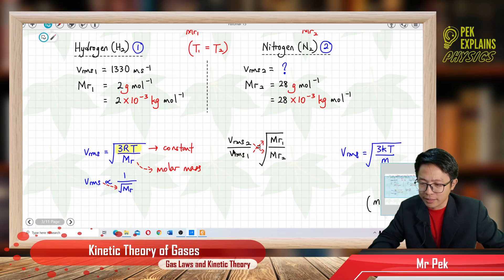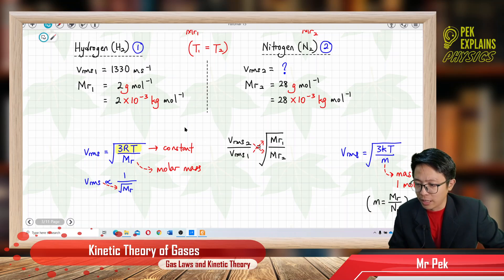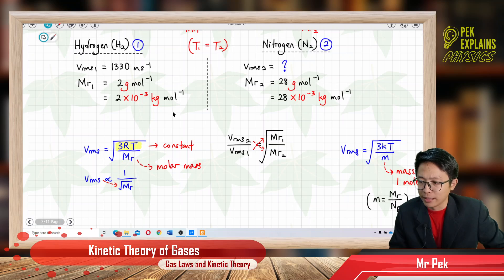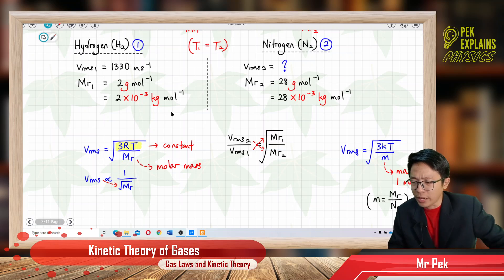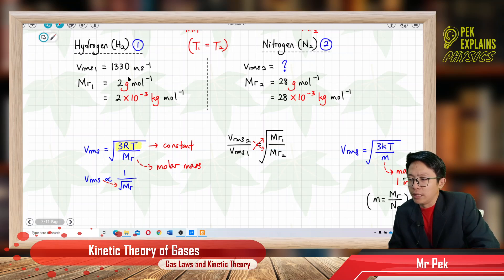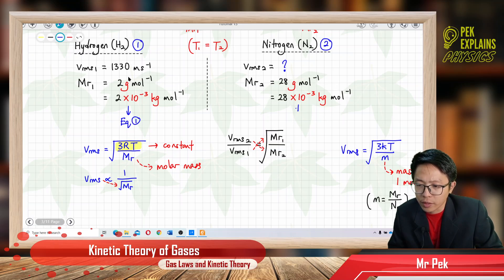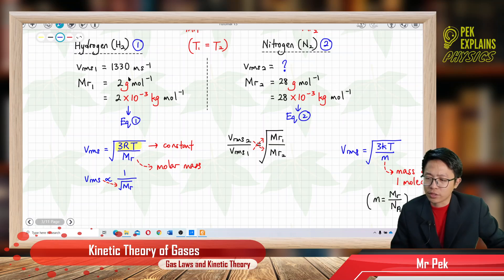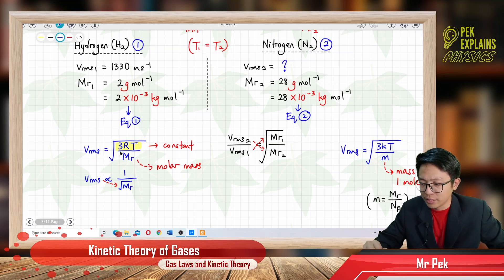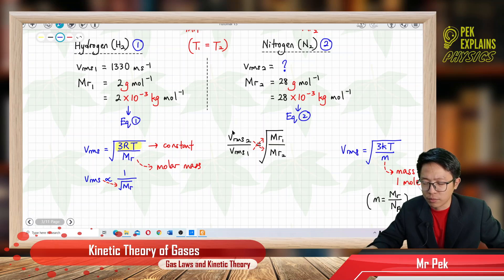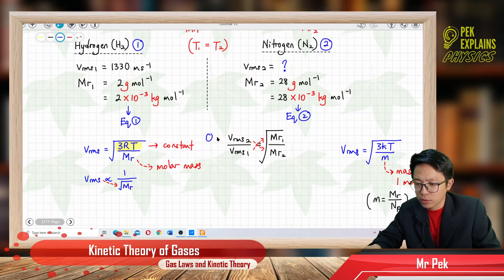This is essentially a simultaneous equation approach. We build equation 1 for hydrogen and equation 2 for nitrogen using the VRMS formula. Then we take equation 2 divided by equation 1 to form a ratio: VRMS2 over VRMS1. When VRMS2 is at the top, its molar mass will be at the bottom; when VRMS1 is at the bottom, its molar mass will be at the top.